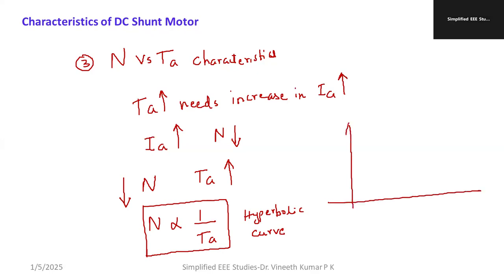So the conclusion is that the N versus TA graph is a hyperbolic graph.